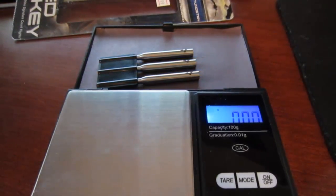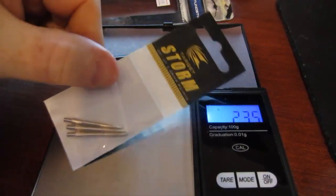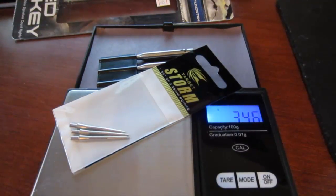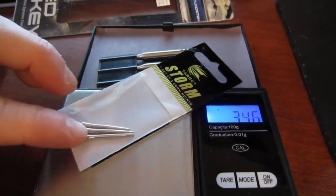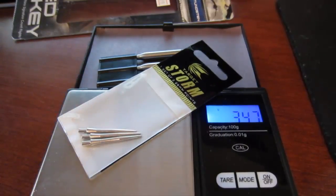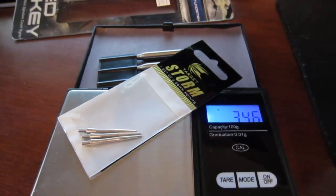So that's how they come stock from the factory, about 14.2 grams. Step two: what would a Ted Hanky dart be without Target storm points? I ordered some 26 millimeter smooth silver storm points, so I'm going to get these installed in the darts and see what sort of weight difference that makes.